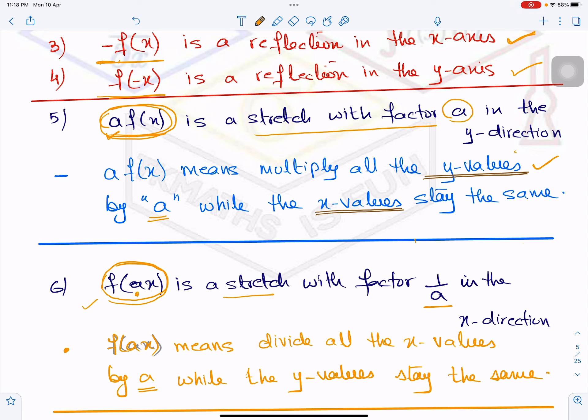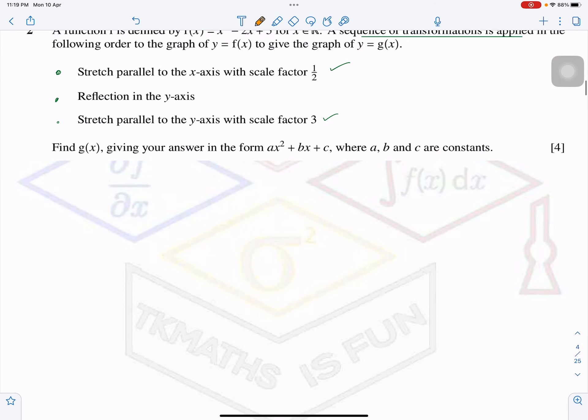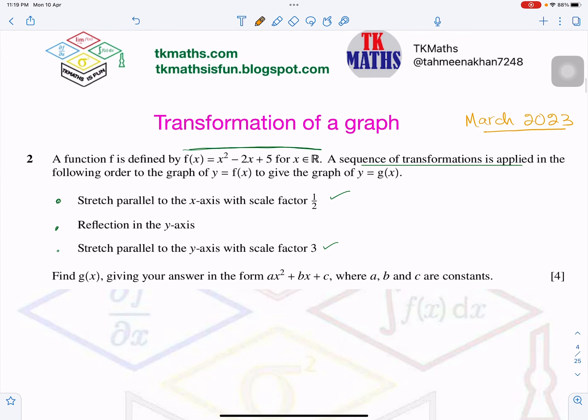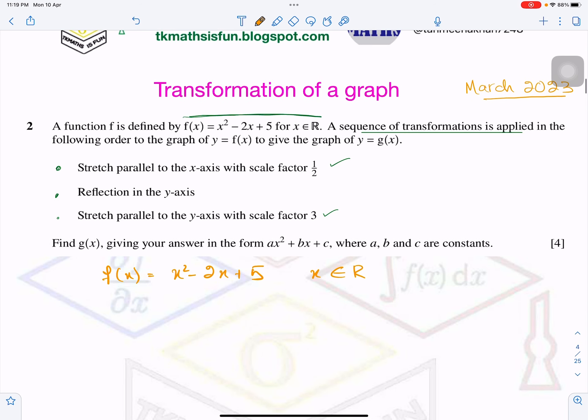So now let us see in the question what does it mean and I will show you a sketch also for better understanding. Now look at this question. The function given to you here is f(x) equals x squared minus 2x plus 5 for all x belongs to real value R.